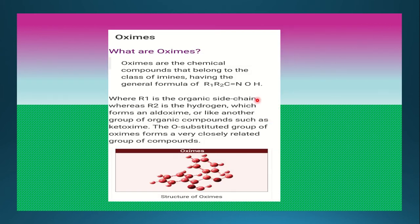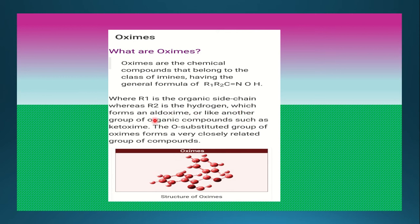First, what are oximes? Oximes are chemical compounds that belong to the class of imines, having the general formula R1, R2, C=NOH. Here R1 is the organic side chain, whereas R2 is hydrogen, which forms an aldoxime, or another group of organic compounds such as ketoximes. The ortho-substituted group of oximes forms a very closely related group of compounds.